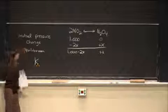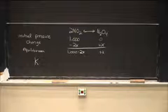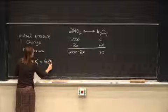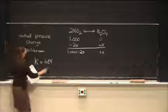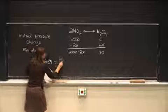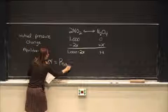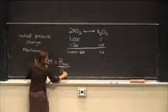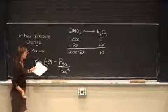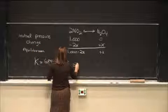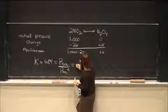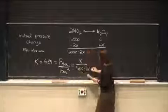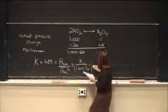So we're talking about equilibrium concentration, so we're talking about K. So K equals 6.84, which is going to be equal to the partial pressure of the product over the partial pressure of the reactant squared. So it's going to be equal to x over (1 minus 2x) squared.